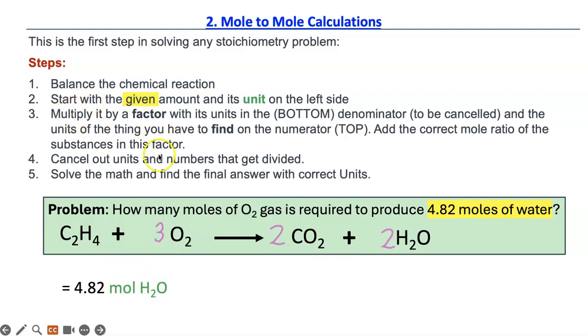Third step, you multiply it by a factor. At the bottom of it should be moles of H₂O because you are going to cancel that out. And this is the denominator.